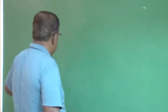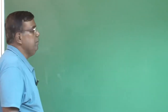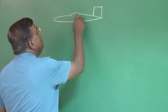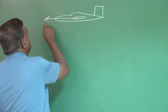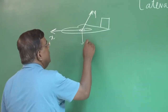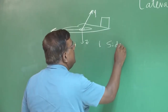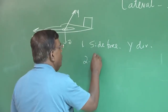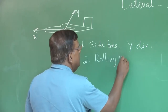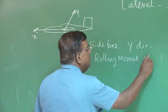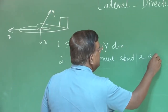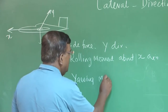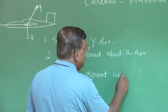Now, talking about dynamic stability, we are talking about the transient. It is important that we understand what forces and moments will be primarily concerned. If this is x, this is y, this is z — the first will be side force along the y direction; the second will be rolling moment about the x axis; and the third will be yawing moment about the z axis.